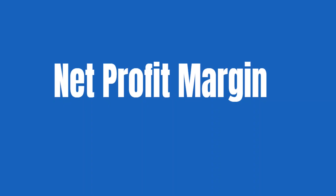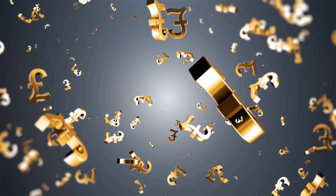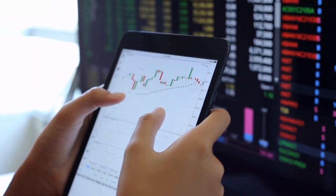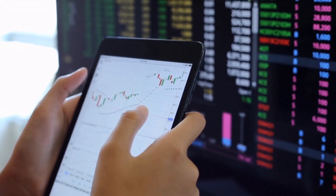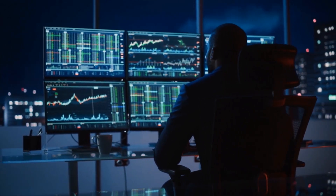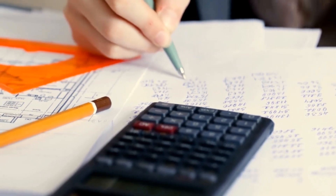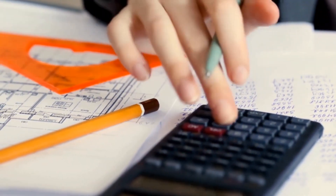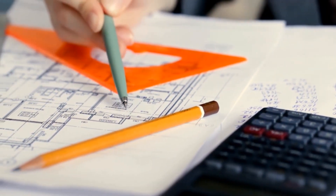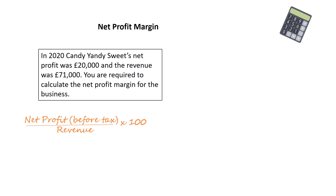Net profit margin. This is the fraction of every pound spent by customers that the company keeps. A high net profit margin can be attractive to shareholders as it might indicate they may receive high dividends, and can also attract potential investors. The net profit margin takes into account all business costs and exceptional items, and is usually calculated before tax is deducted. The formula is net profit divided by revenue, times by 100. You'll notice there is a similarity with the formulas we've looked at so far.